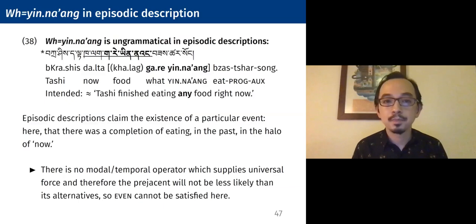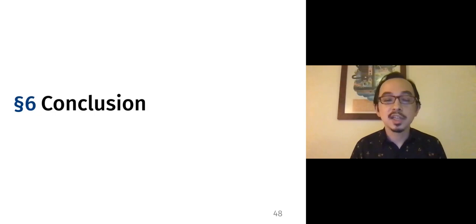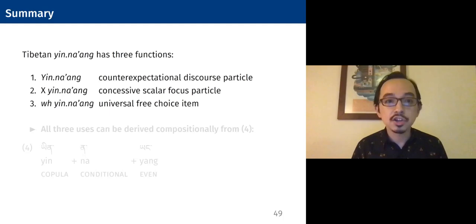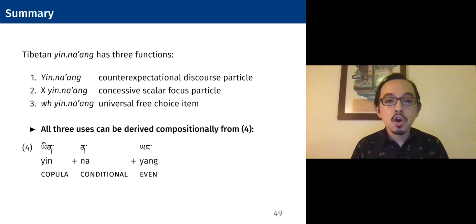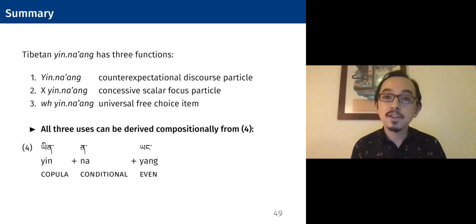So now we'll conclude with that cross-linguistic outlook. To summarize, we've seen that Tibetan yinang has three functions descriptively. Yinang by itself is a counter-expectational discourse particle. Yinang taking some focused constituent is a concessive scalar focused particle. And WH-yinang gives us a universal free choice item. All three uses, I've claimed, can be derived compositionally from its morphologically transparent ingredients: the copula 'in,' the conditional suffix 'na,' and the scalar additive focus particle 'even' — yang.